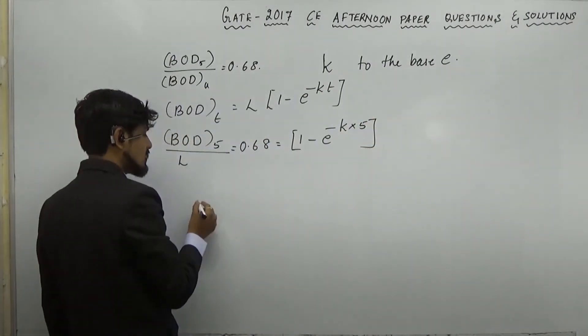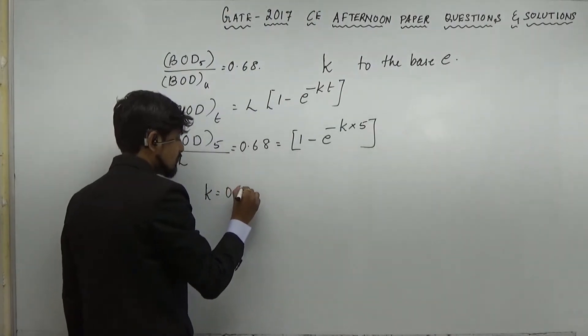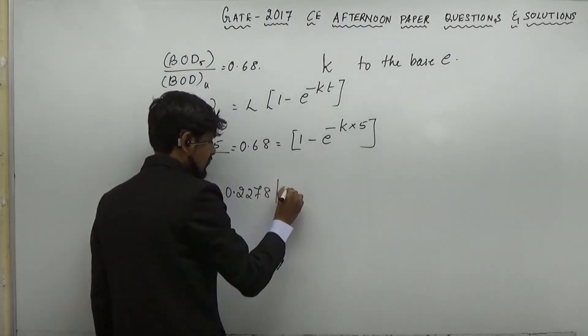So, if you solve this, the K value we're going to get is nearly 0.2278 per day.